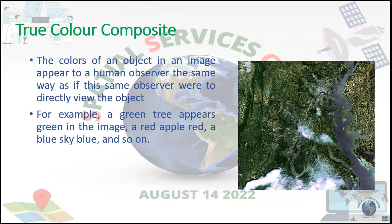True color composite: the colors of an object in an image appear to a human observer the same way as if this observer were to directly view the object. For example, a green tree appears green in the image, a red apple red, a blue sky blue, and so on.